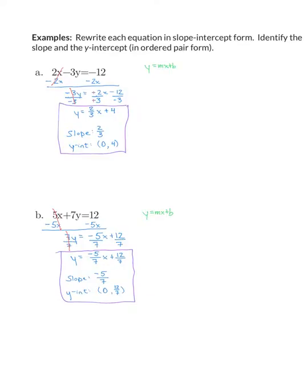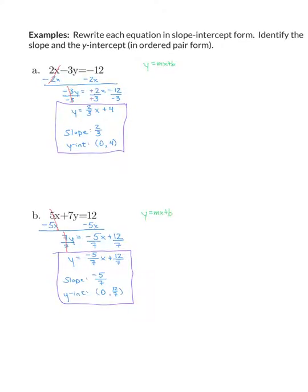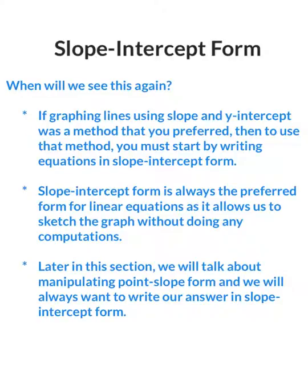Again, this is an example of where we do use that solving for an indicated variable. When will we see this again? If graphing lines using slope and y-intercept was a method that you preferred, then to use that method, you must start by writing equations in slope-intercept form. Slope-intercept form is always the preferred form for linear equations, as it allows us to sketch the graph without doing any computations. Later in this module, we will talk about manipulating point-slope form, and we will always want to write our answer in slope-intercept form.